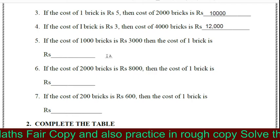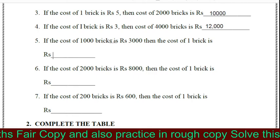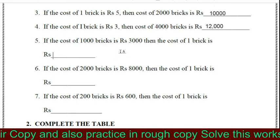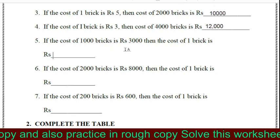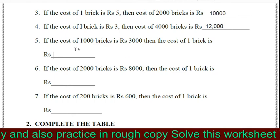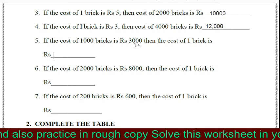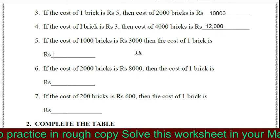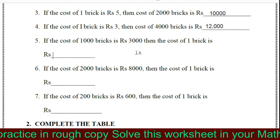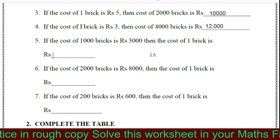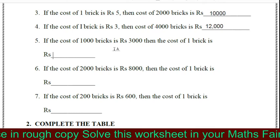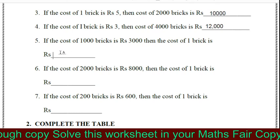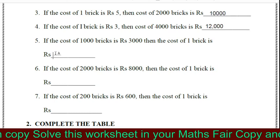We simply have to use the table of 1, adding 3 zeros. So 1 one is 1, giving 1,000; 1 two is 2, giving 2,000; 1 three is 3, giving 3,000. So the answer will be rupees 3.